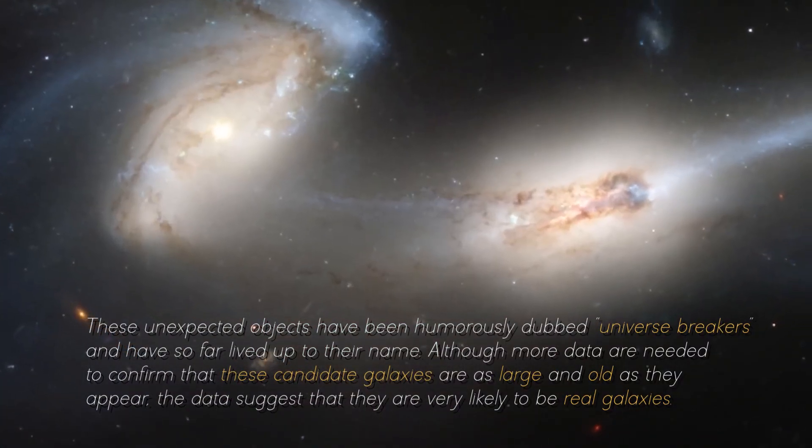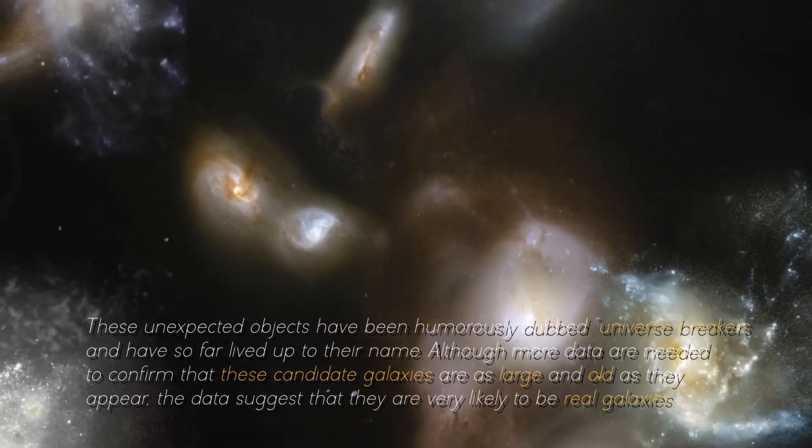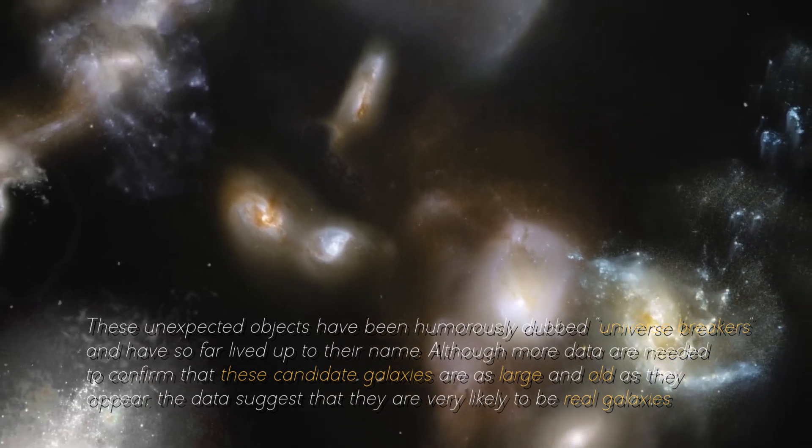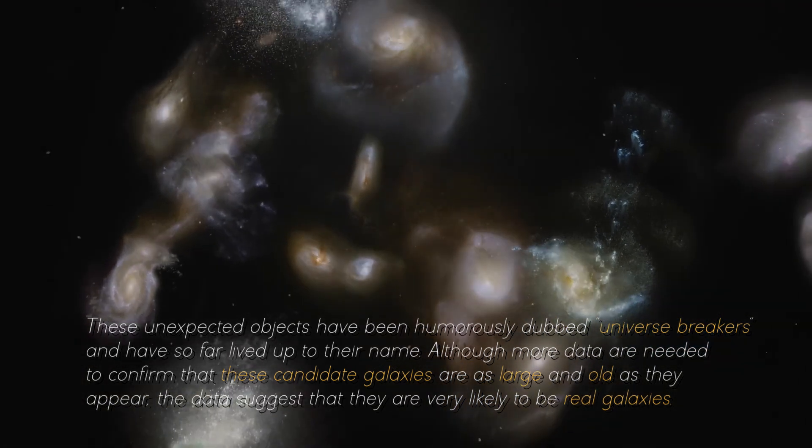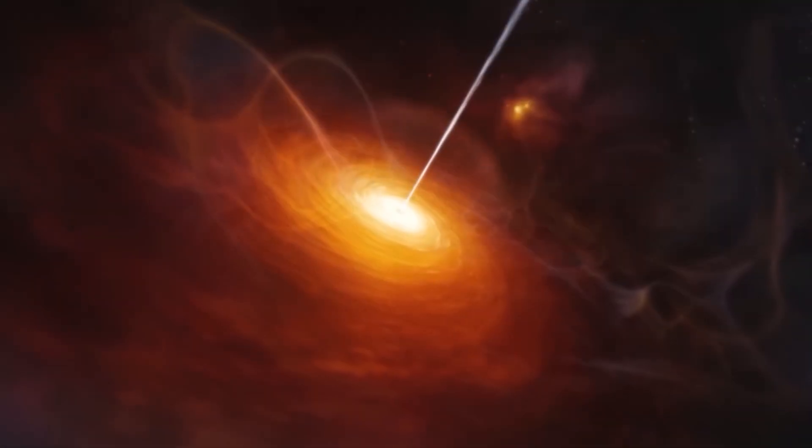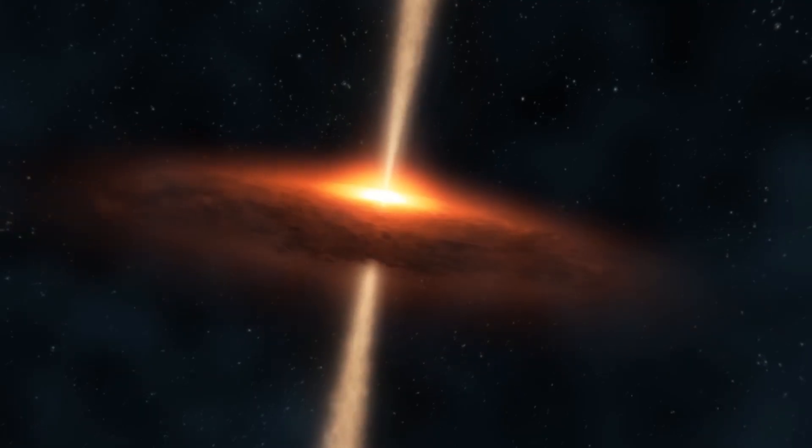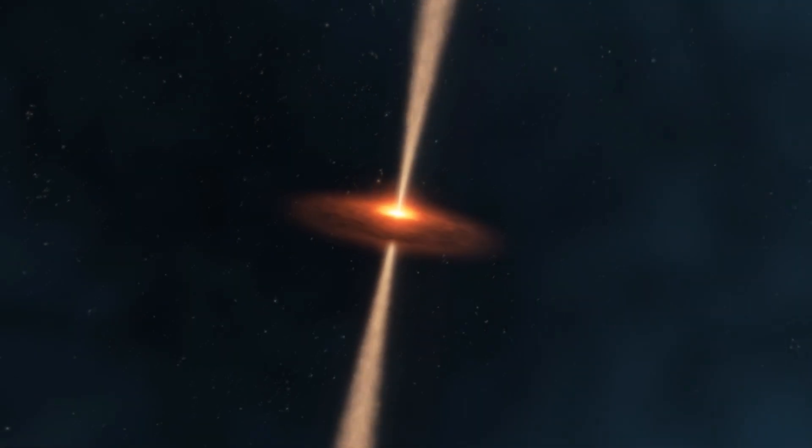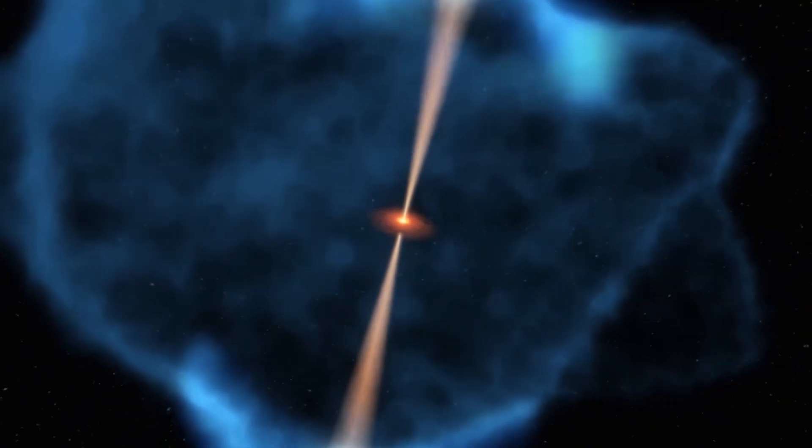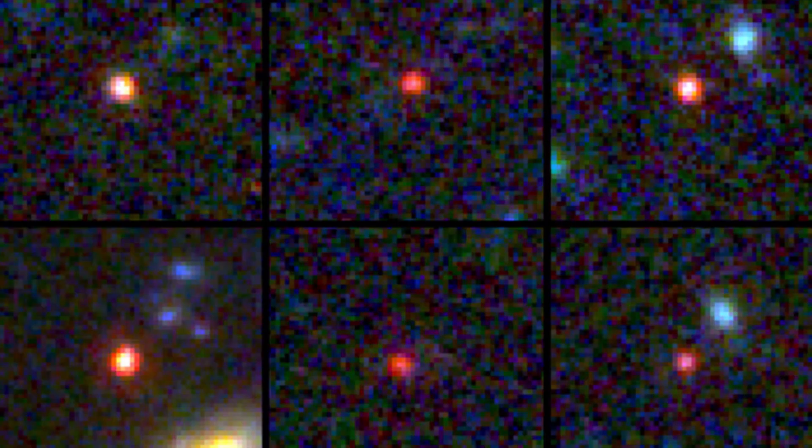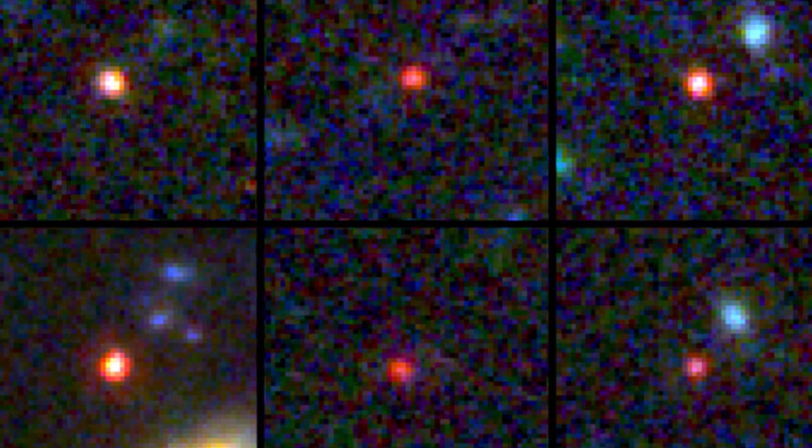Both hypotheses require fundamental change in our understanding of the early formation of galaxies in the universe. These unexpected objects have been humorously dubbed universe breakers and have so far lived up to their name. Although more data are needed to confirm that these candidate galaxies are as large and old as they appear, the data suggests that they are very likely to be real galaxies. There is the possibility that some of these objects are obscured supermassive black holes, which is another interesting aspect to consider. However, the amount of mass discovered implies that the known mass of stars at this stage of the universe is up to 100 times larger than previously thought.